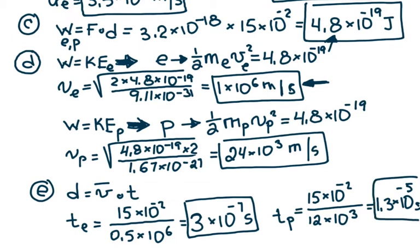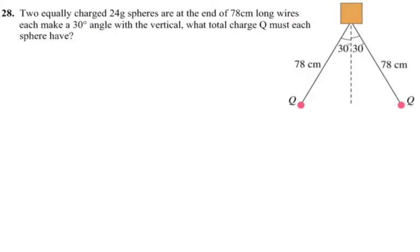The neutron never moved, because there was no force acting on it — no velocity, and no time to reach either plate. This type of question isn't seen often on the AP Physics 2 exam, but it's useful preparation for college-level physics.